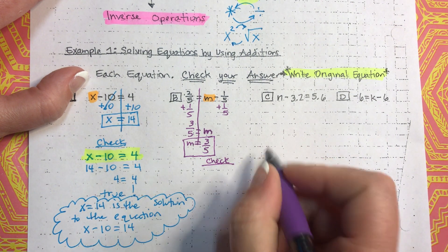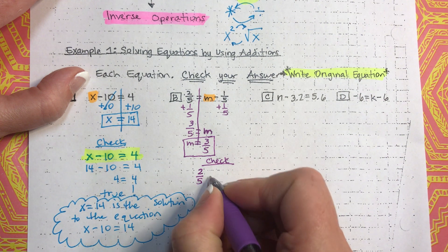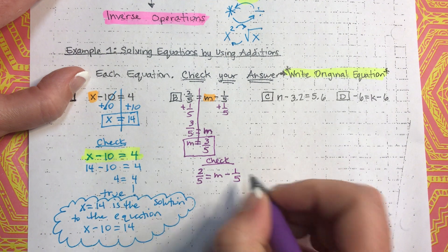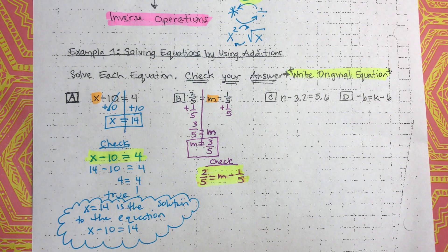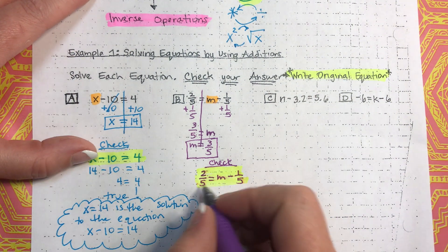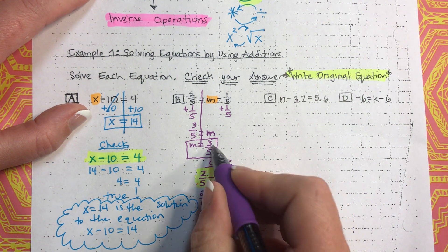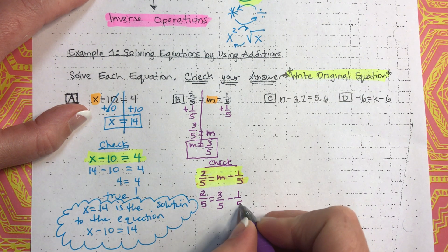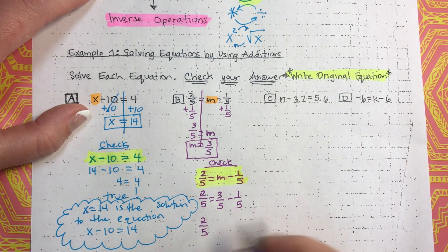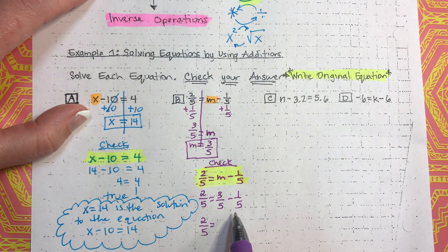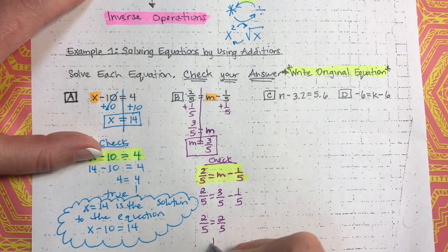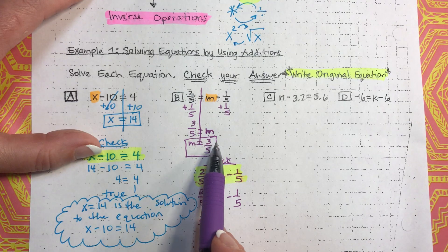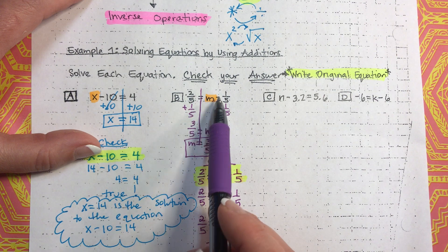We need to go ahead and check our answer. Write the word 'check,' then write the original equation: two-fifths equals m minus one-fifth. Now, I'm going to substitute three-fifths in for m. So, two-fifths equals three-fifths minus one-fifth. Two-fifths is already simplified, so I'll leave that. Subtracting the fractions — they have a common denominator of five — three minus one on top is two, and we keep five on the bottom. That's a true statement, which means m equals three-fifths is the solution to two-fifths equals m minus one-fifth.